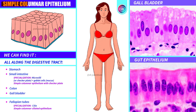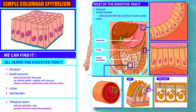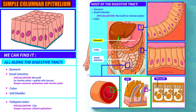Simple columnar epithelia. Simple epithelium, because there is only one layer, and columnar because these cells are shaped like a cylinder or column. These can be found all along the digestive tract — in the stomach, in the small intestine and in the colon. Here we see the stomach, and observe the single layer of columnar epithelial cells that line it. The same occurs in the colon: a single layer of cylindrical cells covers its walls.